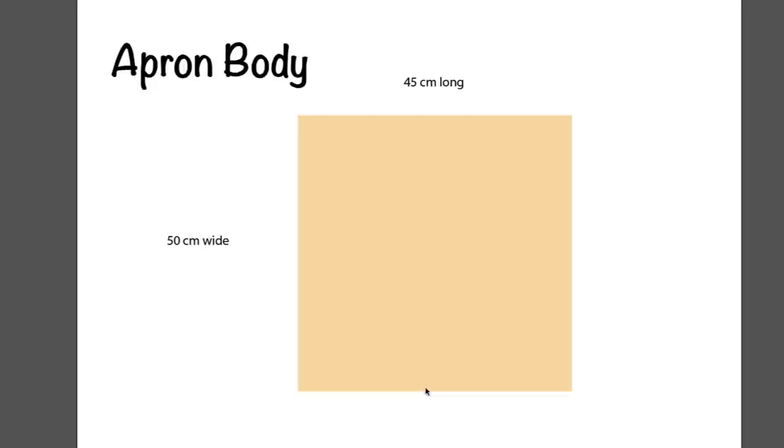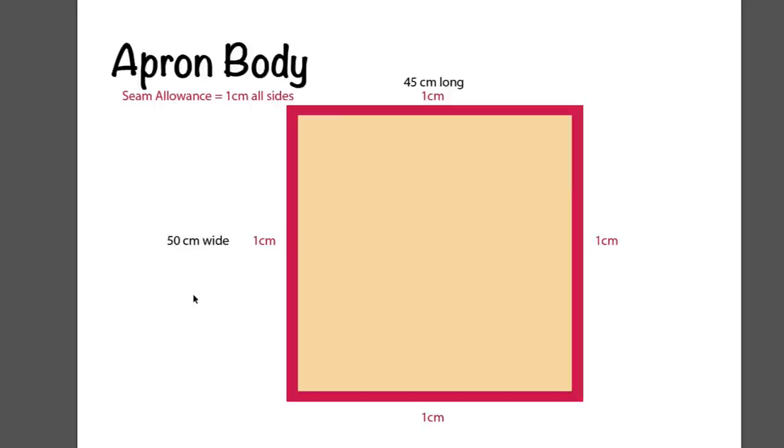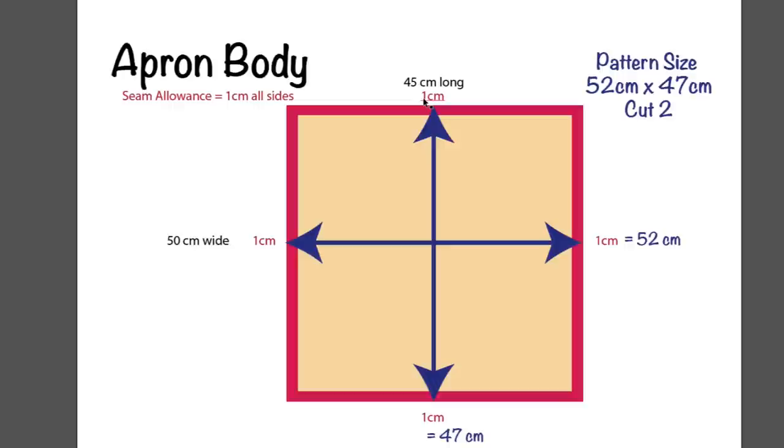So I determined that I wanted my apron to be 45 cm long from the waist down and it would be 50 cm wide. The next thing that we need to do is determine the seam allowances that are needed. I've got a 1 cm seam allowance on all sides. We have to add 1 cm all the way around. So the results would be on our length 45 plus 1 plus 1, we have 47 cm in length. And 50 cm wide plus 1 plus 1 is 52. So we need a piece of fabric that's 52 by 47 cm.